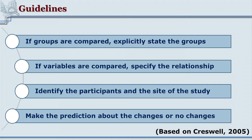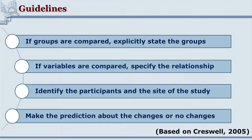Similarly, if there are variables under study, the tentative relationship between the variables also needs to be specified before writing the hypothesis. One also needs to identify the participants and the site under study — for example, which level of students: post-graduation, standard seven, standard ten, and so on. The site (which school, which level, which country) is especially useful when socio-cultural aspects have an impact.